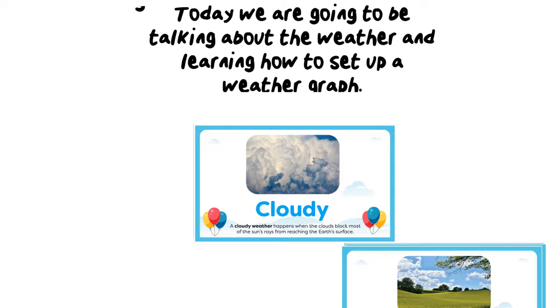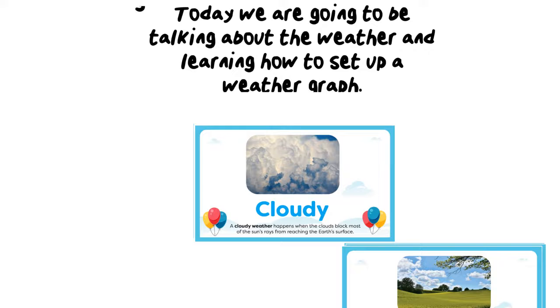Cloudy. Cloudy weather happens when the clouds block most of the sun's rays from reaching the earth's surface, and it just seems kind of dreary.